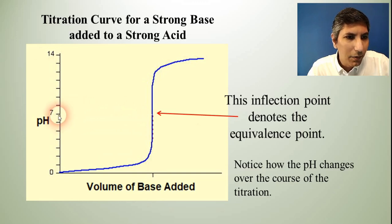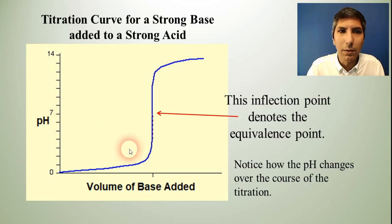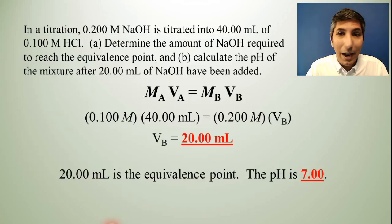So if we take that inflection point and just kind of drag it over here to the left, you'll notice that that inflection point, that equivalence point is at pH 7. And so that's one of the ways that we just can look at this titration curve and see that this is a strong acid, strong base curve because its inflection point is at pH 7.